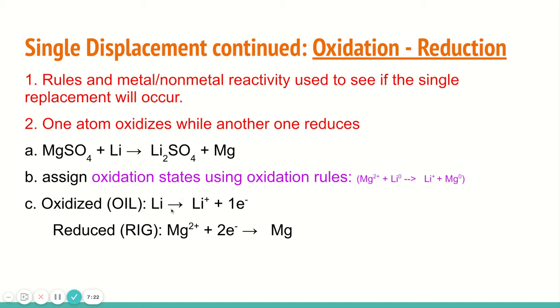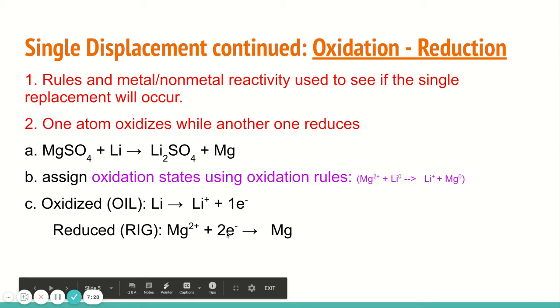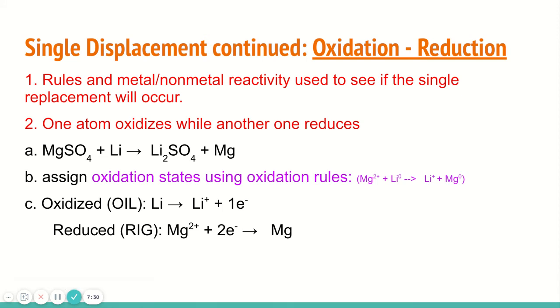For now, this is what we need to know. Oxidation reduction is a single replacement reaction. It could also be a double replacement reaction, but typically we see it as a single replacement reaction. We do that by assigning oxidation states, seeing who's changing, identifying who's being oxidized and who's being reduced.